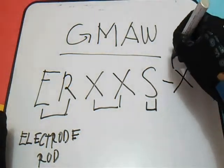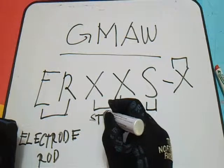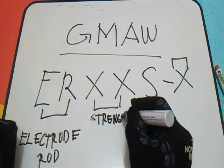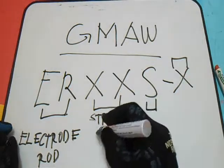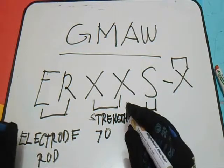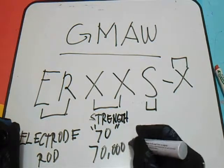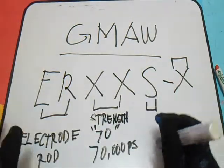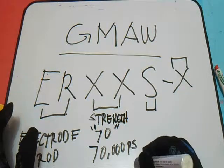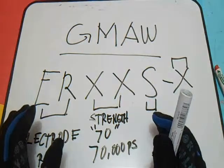The double X denotes the strength — the minimum tensile strength of the deposited metal, which is at least 70,000 PSI, meaning pounds per square inch.